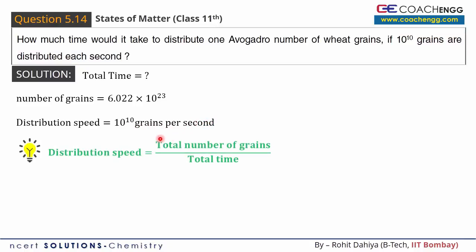This is very straightforward. Distribution speed equals the total number of grains divided by total time.